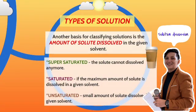Another basis for classifying solutions is the amount of solute dissolved in the given solvent. Number one, we have supersaturated. Number two, we have saturated. And number three, we have unsaturated. Supersaturated is when the solute cannot dissolve anymore. Saturated means the maximum amount of solute is dissolved in a given solvent. While unsaturated means a small amount of solute is dissolved in a given solvent.